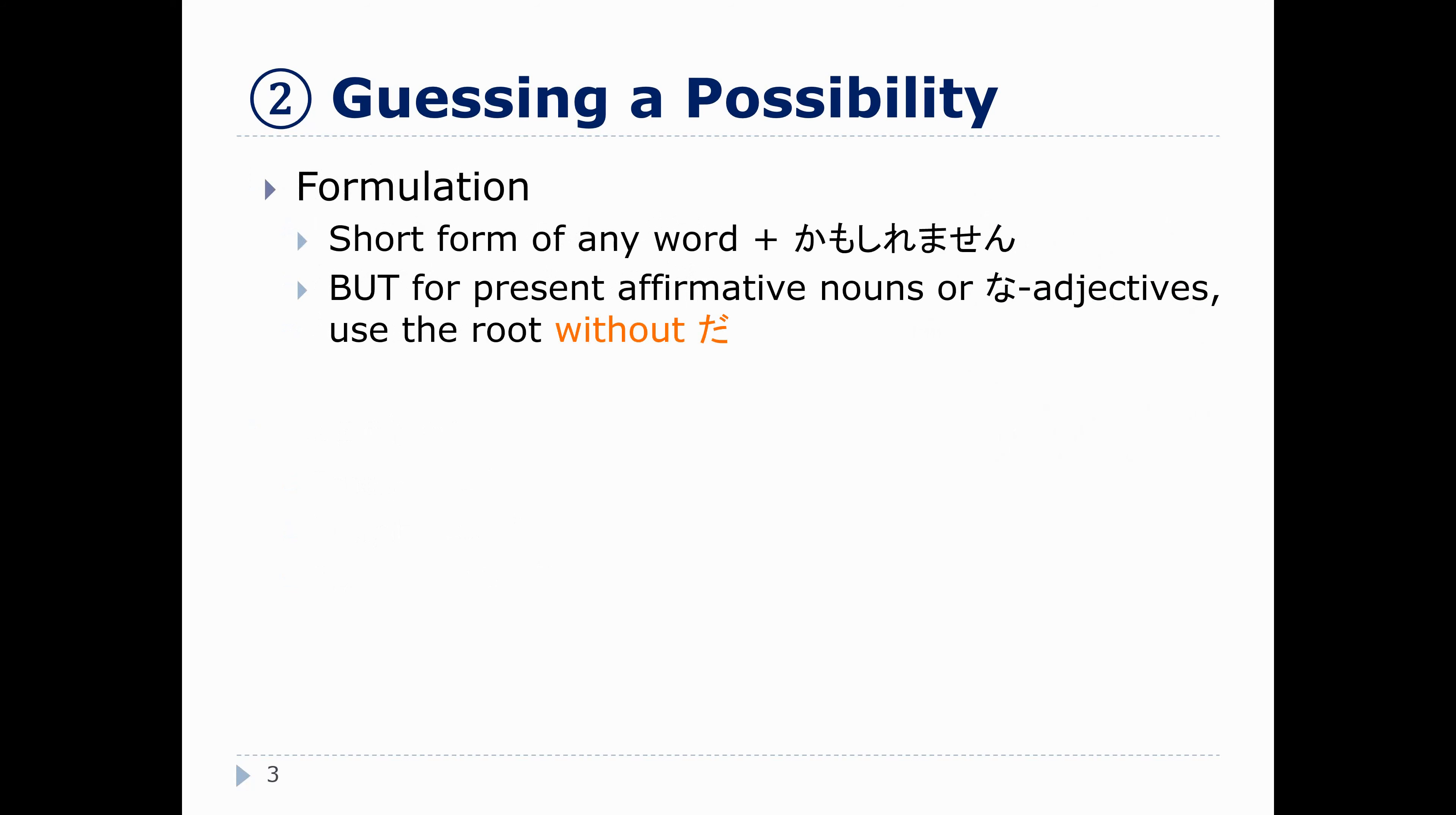So, when we make a sentence with かもしれません, we can use the short form of any word plus かもしれません. So, it's very simple to make. For present affirmative nouns and な-adjectives, we say this かもしれません without だ. So, it's just 元気かもしれません or 学生かもしれません.